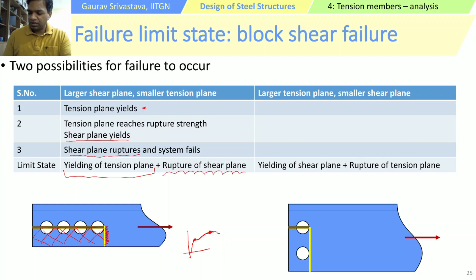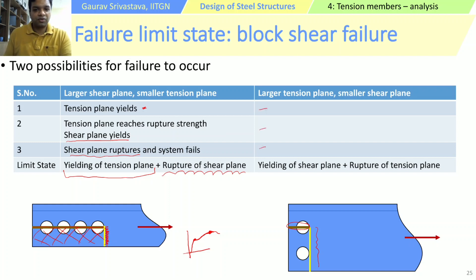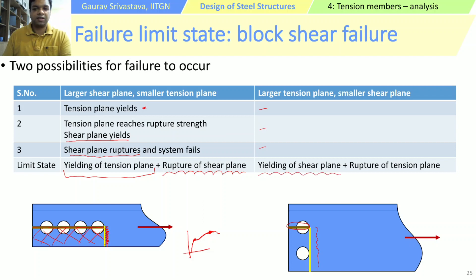The other situation is when the shear plane is small and the tension plane is large. The sequence of events for this case I have left blank for you to think through yourselves. But in this case the limiting state will be the opposite of what was earlier: we want to prevent yielding of the shear plane and we want to prevent rupture of the tension plane.